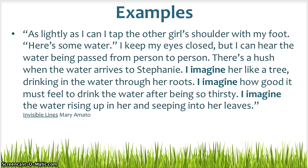This is an example I read this morning: 'As lightly as I can, I tap the other girl's shoulder with my foot. Here's some water. I keep my eyes closed, but I can hear the water being passed from person to person. There is a hush when the water arrives to Stephanie. I imagine her like a tree drinking in the water through her roots. I imagine how good it must feel to drink the water after being so thirsty. I imagine the water rising up in her and seeping into her leaves.' By choosing to repeat the words 'I imagine,' that's exactly what I did — I imagined right along with the main character. That's the effect the writer wanted us to experience, choosing words powerful enough for the reader to notice, slow down, and experience with the characters.